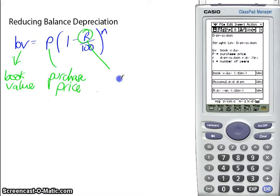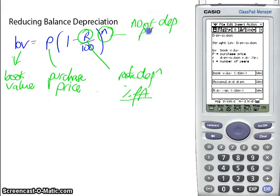This is my purchase price. Here is my rate of depreciation. This is a percent per annum. And here is the number of depreciation periods.